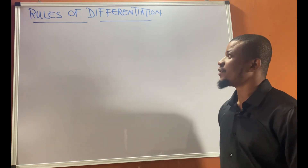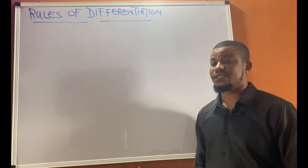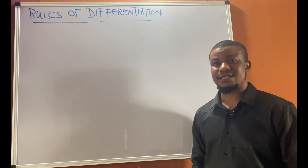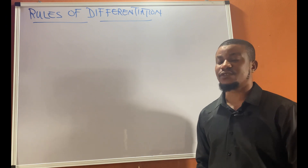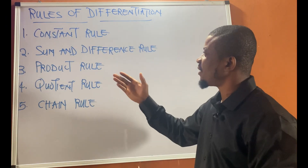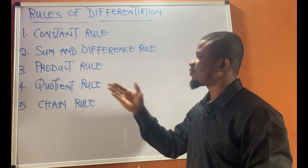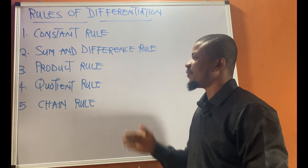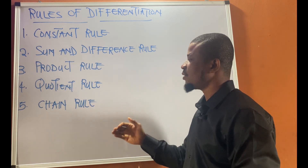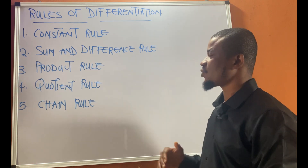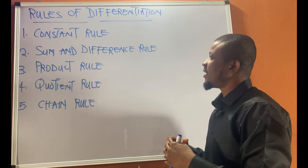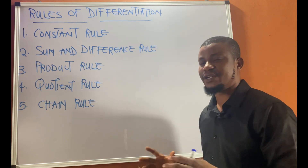Alright guys, in today's video we'll be talking about rules of differentiation. These rules of differentiation are necessary to effectively differentiate various functions. We have: one, the constant rule; two, sum and difference rule; three, product rule; four, quotient rule and chain rule. We'll be looking at these various rules to see how we can apply them to effectively differentiate various functions.